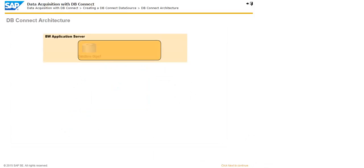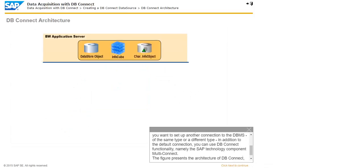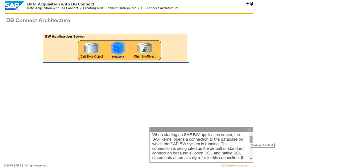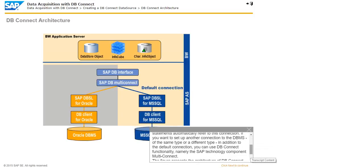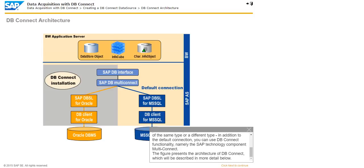When starting an SAP BW application server, the SAP kernel opens a connection to the database on which the SAP BW system is running. This connection is designated as the default or standard connection because all OpenSQL and native SQL statements automatically refer to this connection. If you want to set up another connection to the DBMS of the same type or a different type in addition to the default connection, you can use dbConnect functionality, namely the SAP technology component multi-connect. The figure represents the architecture of dbConnect, which will be described in more detail.